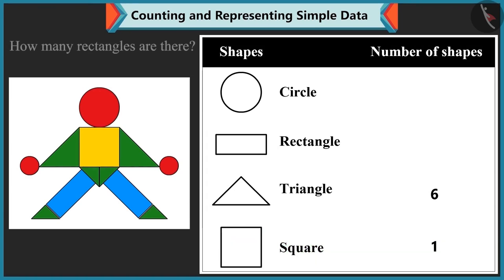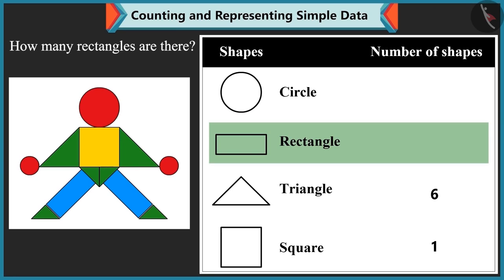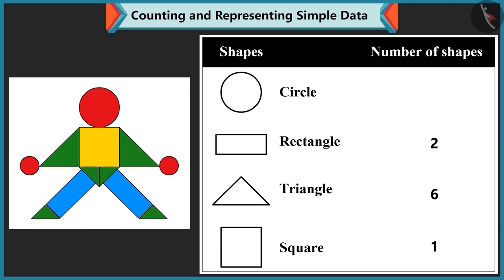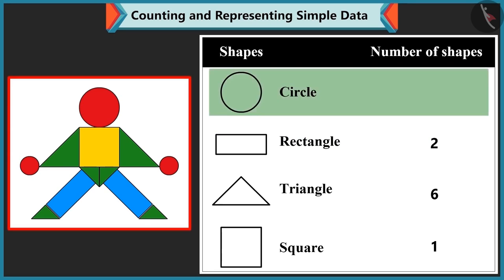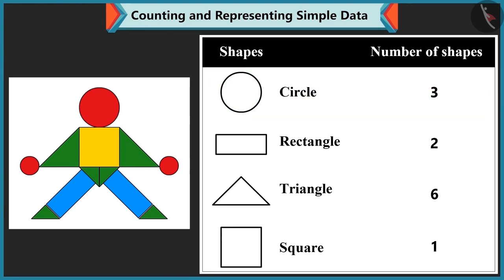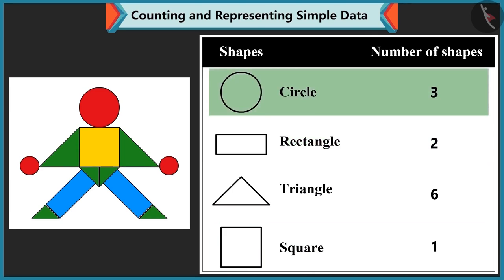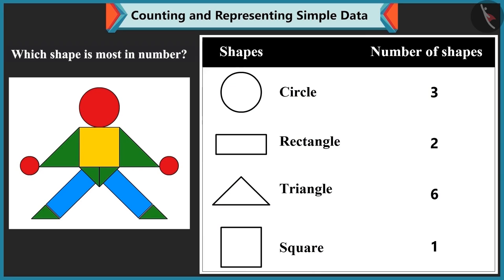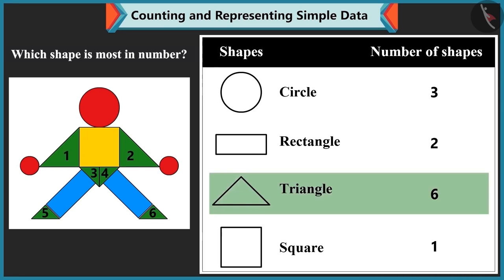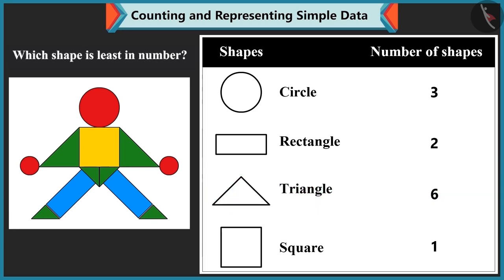Mummy asks how many rectangles there are. Bubbly counts: rectangles are 1, 2 — only 2. Then Bubbly points out there are 1, 2 and 3 circles in the picture. Mummy asks Bubbly to summarize all the shapes counted: triangles, squares, rectangles and circles. Bubbly identifies triangles as most in number with 6, and square as least with only 1.